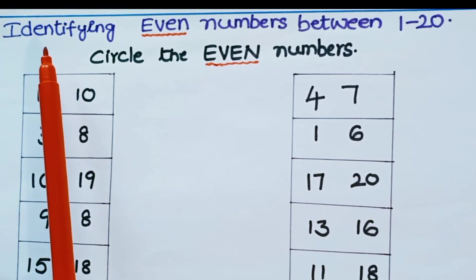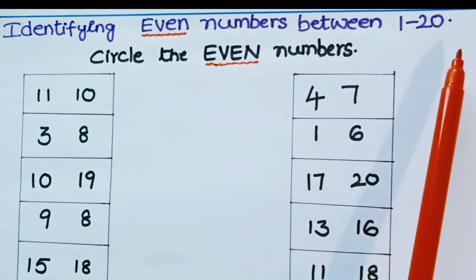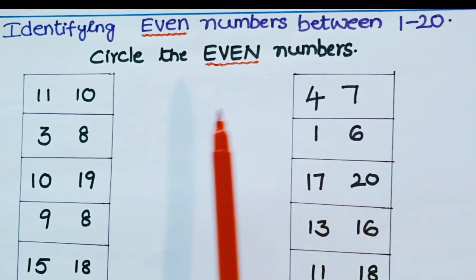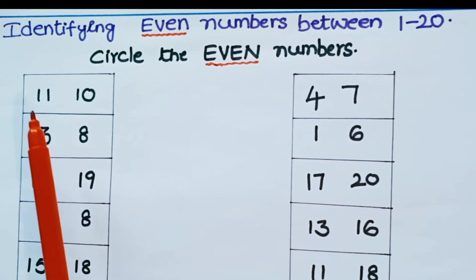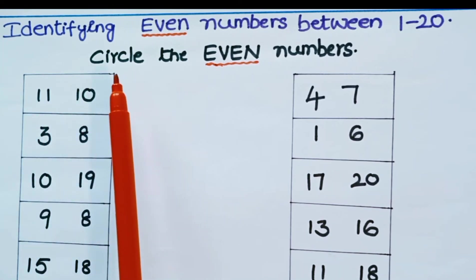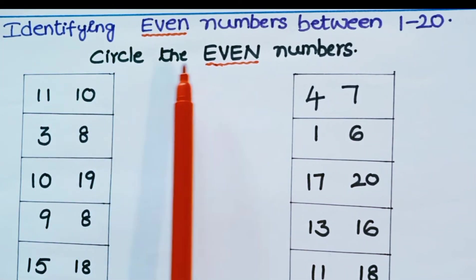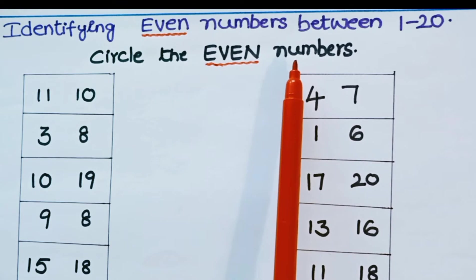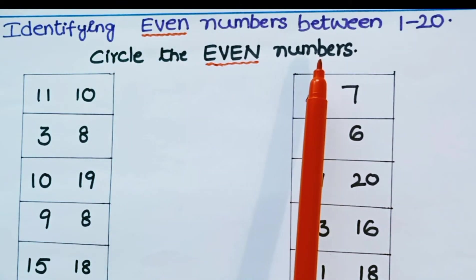Now look at the next worksheet. Read the question: identifying even numbers between 1 to 20. Here we have to identify the even numbers present in each row and circle those even numbers.